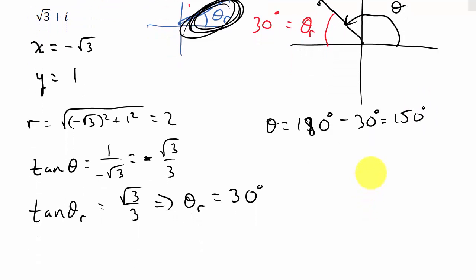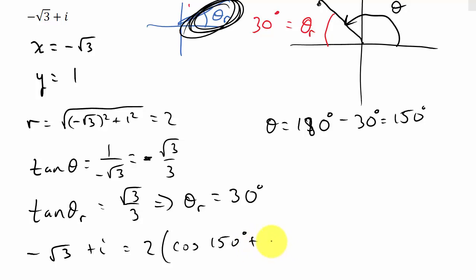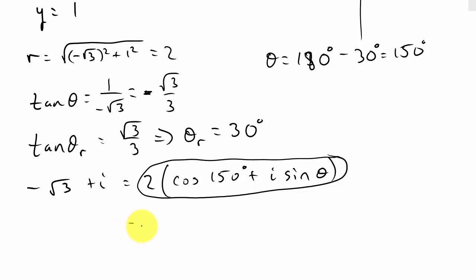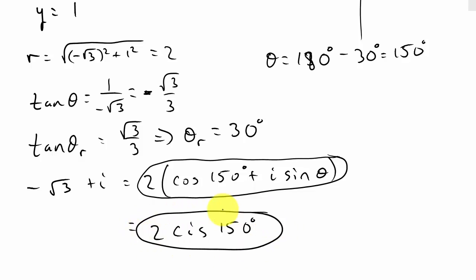So -√3 + i converted to trigonometric form is 2 times (cosine 150° + i times sine 150°). This can also be written in compact or abbreviated form as 2 cis 150°, where 'cis' stands for cosine plus i sine.